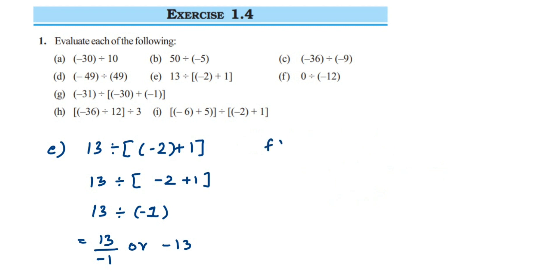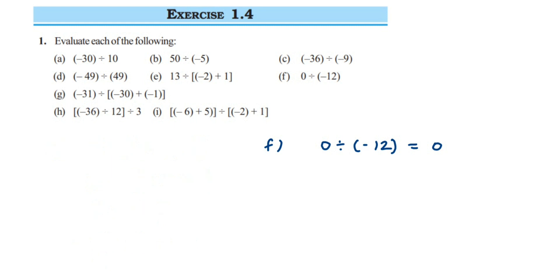Problem f: 0 divided by minus 2. Whenever you divide 0 by any number, your answer is always 0 — no matter whether it's a negative or positive number. So the answer is 0.